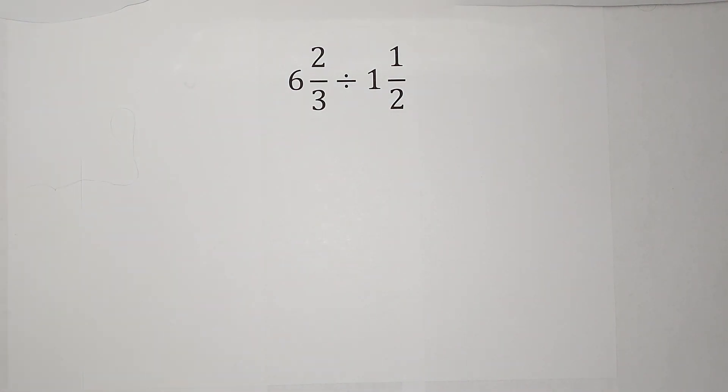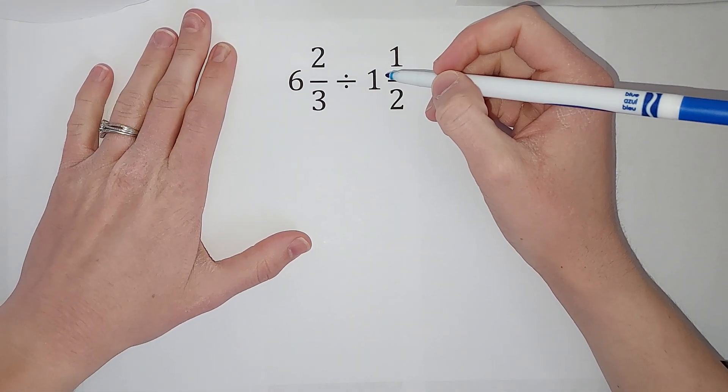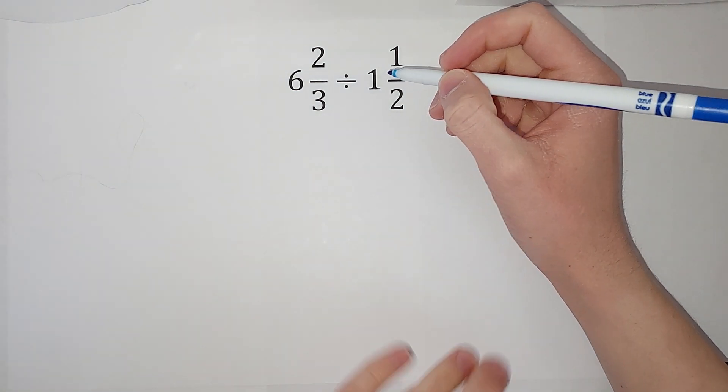The first thing I want to do is change these mixed numbers to improper fractions. How do I do that? I'll do it here; if you need a more in-depth video, I will link one in the corner.